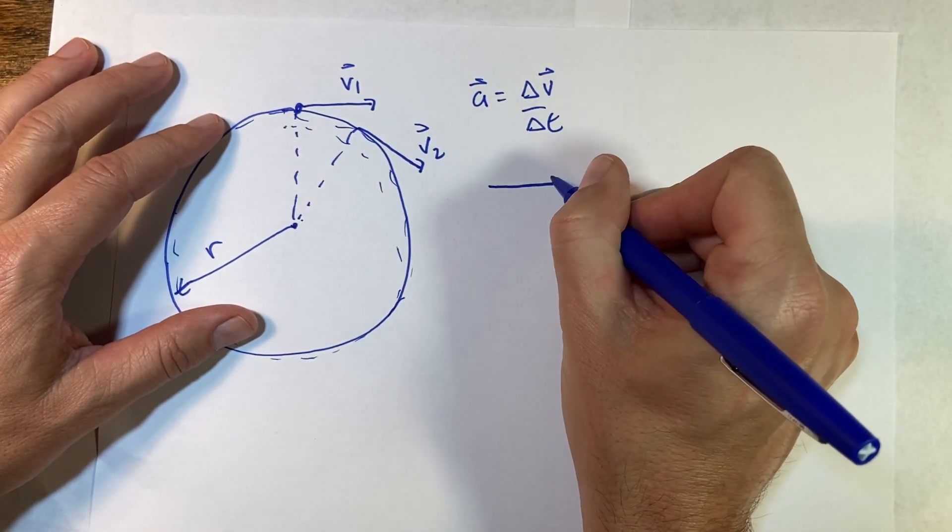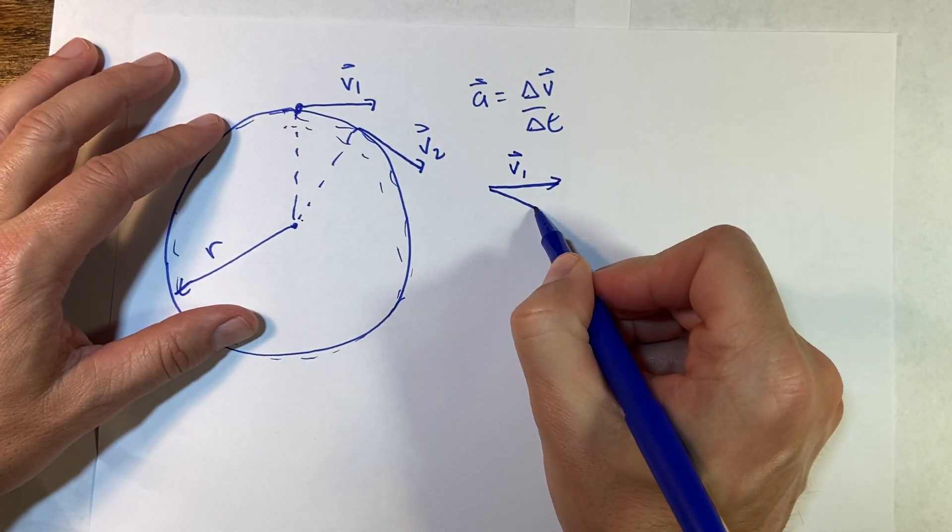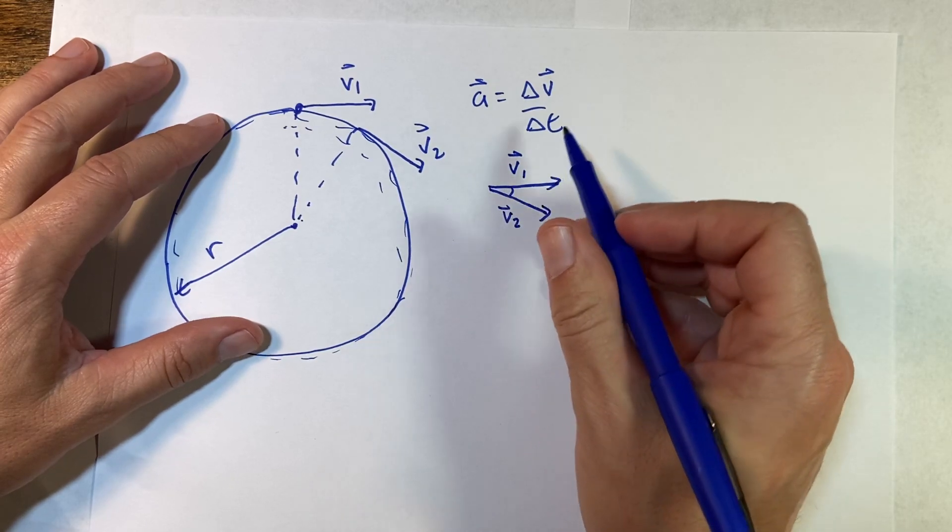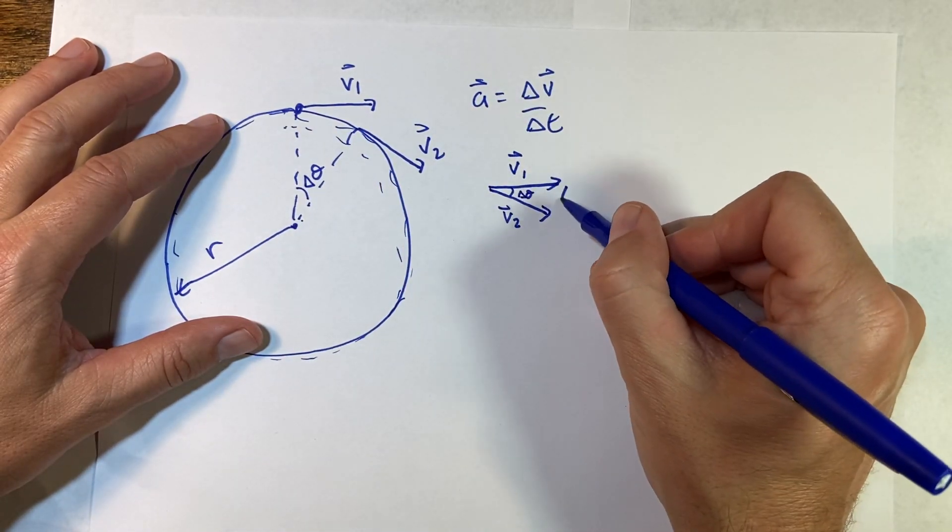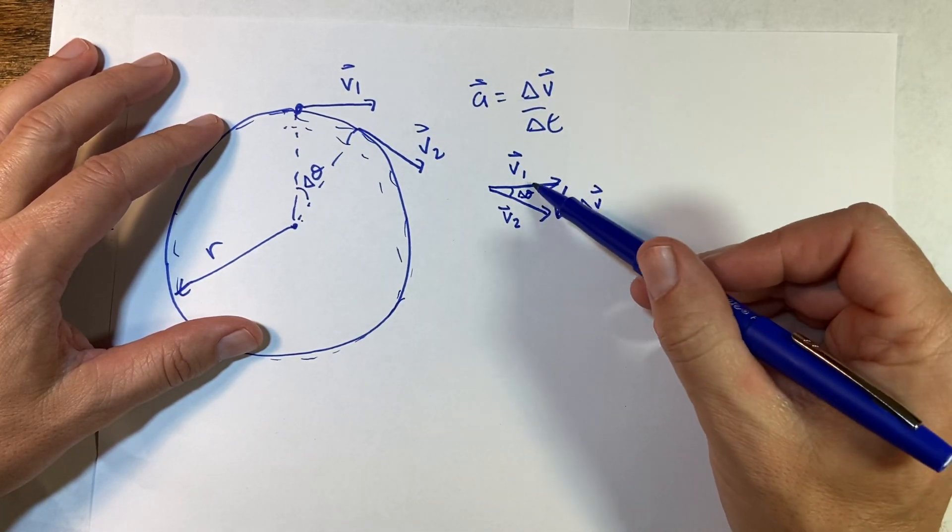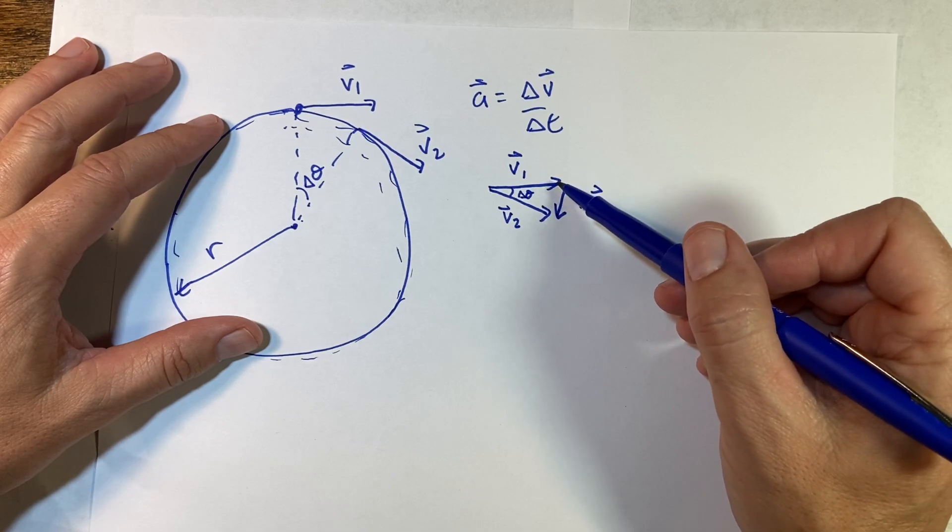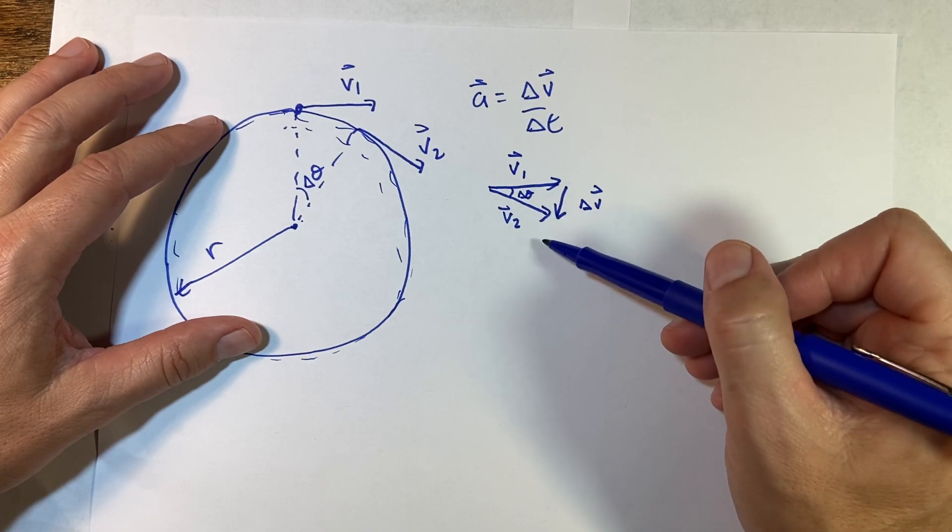Actually, let's do the change in velocity. So if I draw this out, I have v1 right there, v2 is the same length right there, and this is the angle—that's delta theta. That's delta theta, and that is delta v. So you see it gets from the initial to the final.